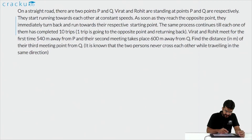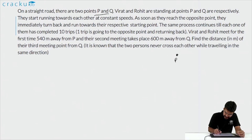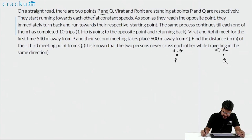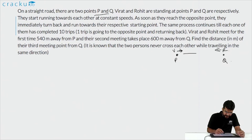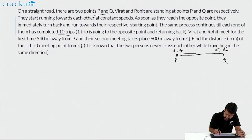In this question, Virat and Rohit are standing at points P and Q respectively on a straight road. They start running towards each other at constant speed, and as soon as they reach the opposite point, they immediately turn back. This continues until one of them completes 10 trips. Virat and Rohit meet for the first time 540 metres away from P. Let the distance between P and Q be L. So Virat has run 540 m and Rohit has run L − 540 m at the first meeting.